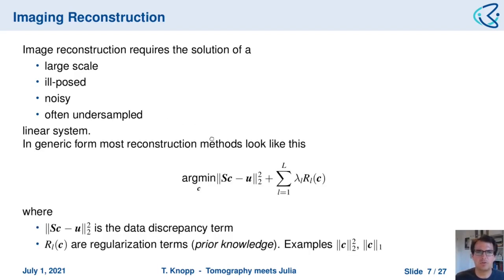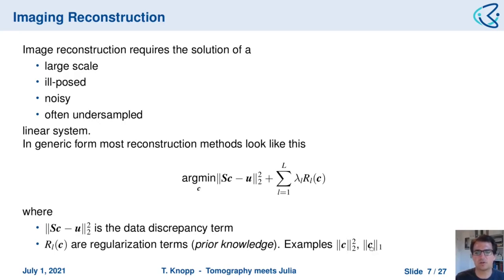In a generic form, most modern reconstruction methods look like this: we have an optimization problem where we minimize a functional. The first part is the data discrepancy term, ||S·C − U||₂, where we aim to match our model S·C to the data U. In addition, because of the undersampled nature we require regularization terms that bring prior knowledge into the system and allow for a stable solution. Examples include the classical L2 prior, L1 prior, or a wavelet transform to enforce sparsity.